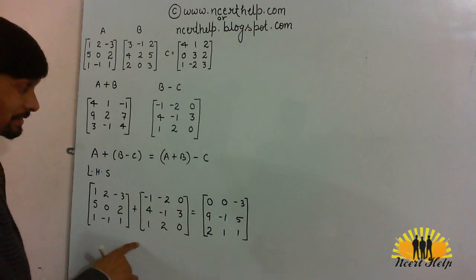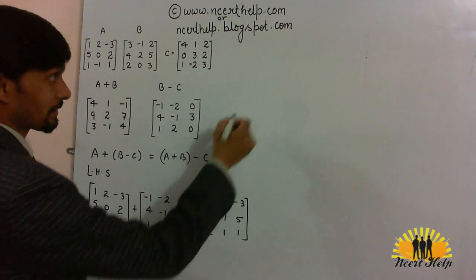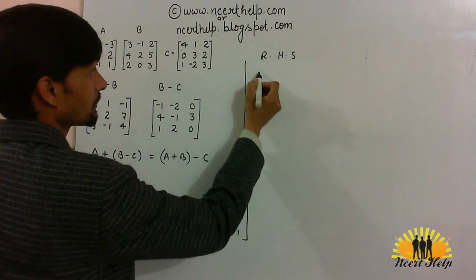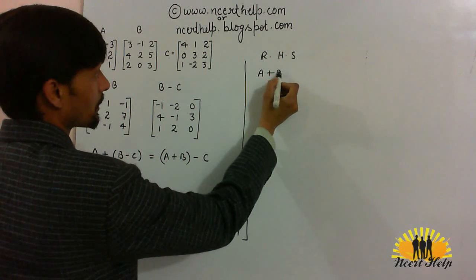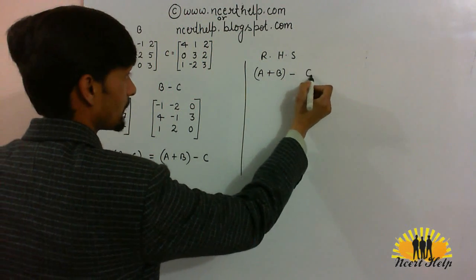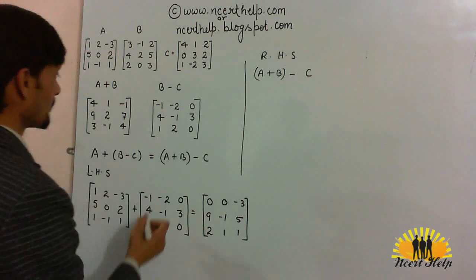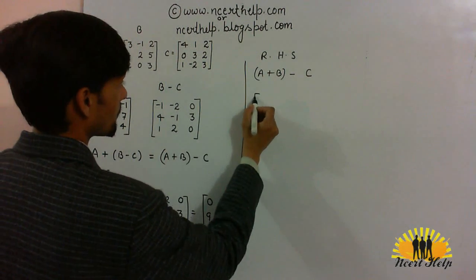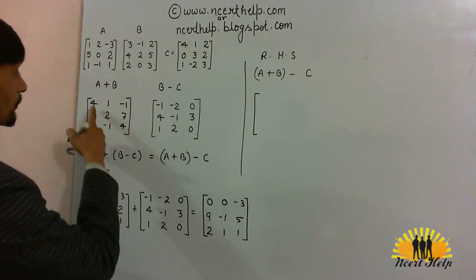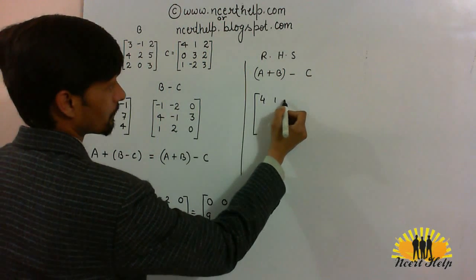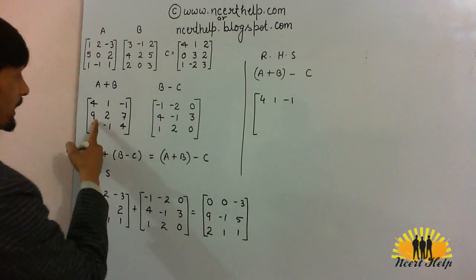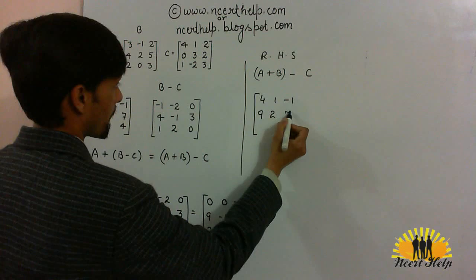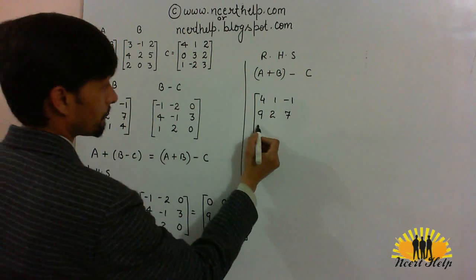Let's check whether it is equal to this or not. So, let's take right hand side of this question. It is A plus B minus C. A plus B, 3 minus 1, 2 minus 1, 4.